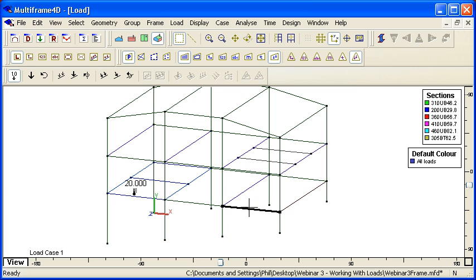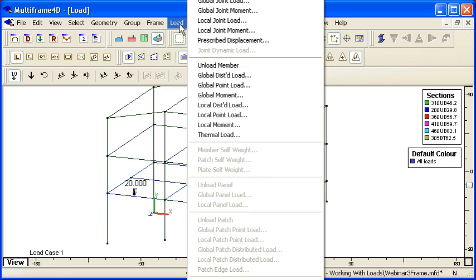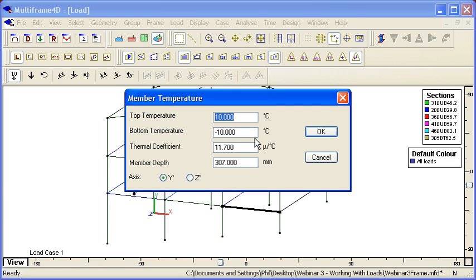But if I put in a gradient, so if I choose a member and I put a different top and bottom temperature relative to ambient gradient and a depth of that, then in this case those radio buttons will take effect. So that would be a thermal gradient between the top and bottom flange, and that would be a thermal gradient across the width of the member.